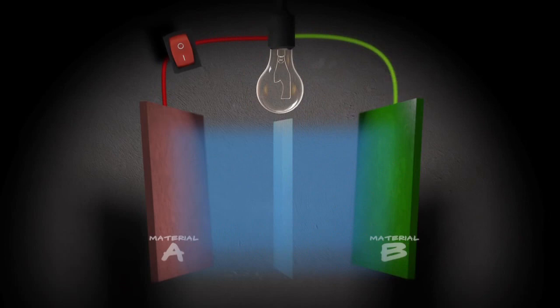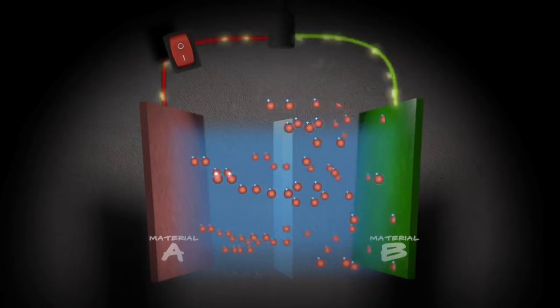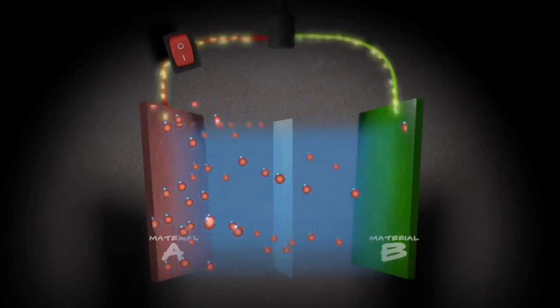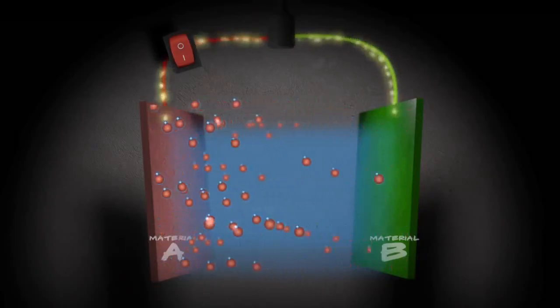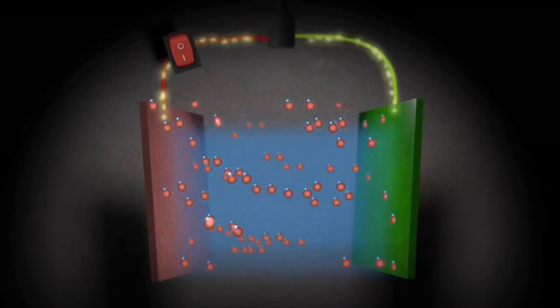To recharge the battery, you just do things in reverse. Instead of a circuit, you're putting in energy that forces the electrons back into material A. The ions then leave material B and rejoin their lost electrons, and the battery is ready to discharge again.